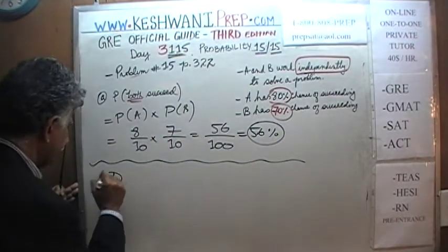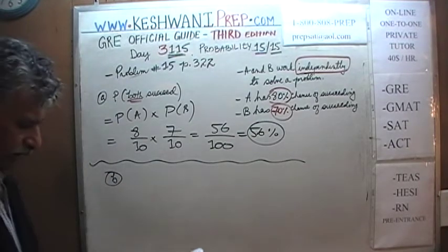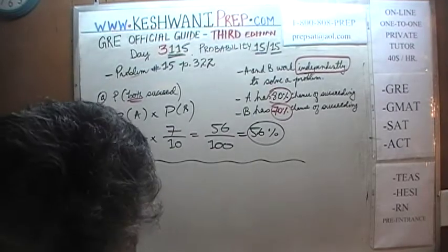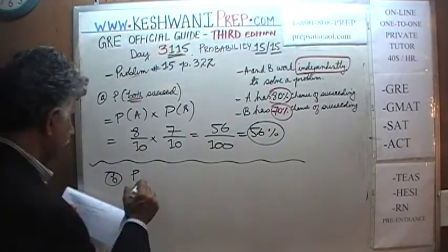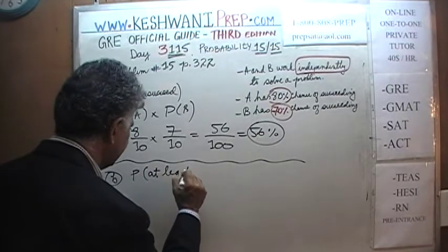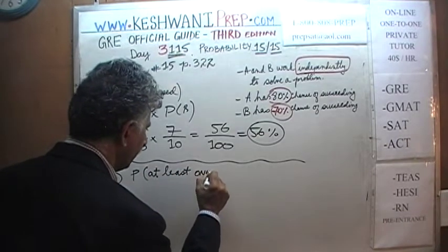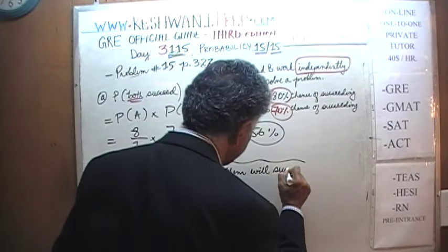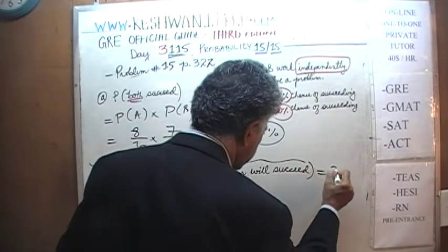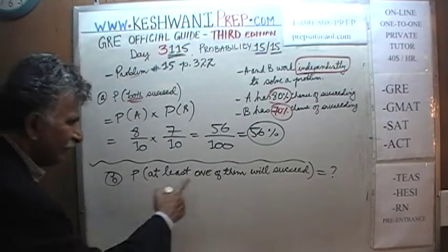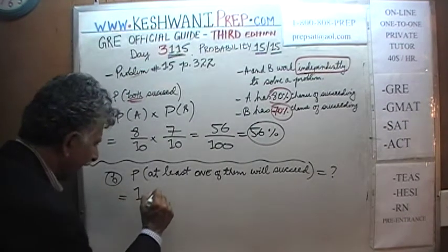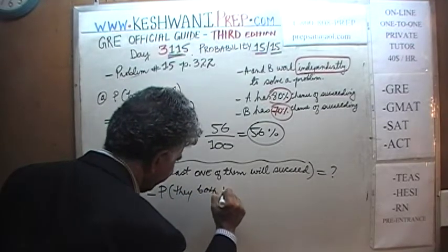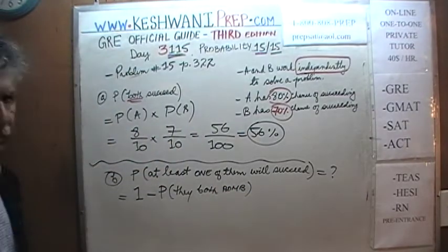Let's look at part B. Part B says what are the odds that at least one of them will succeed? The odds that at least one of them will succeed is the same as one minus the odds that they both fail.